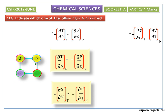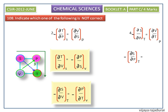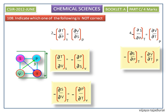Next, consider the right side of the square marked as 3. Draw the diagonal towards 3 — this is in the downward direction, so put a negative sign. The partial derivative of S with respect to P at constant T equals — since the other diagonal is in the upward direction — positive partial derivative of V with respect to T at constant P. This equation matches the fourth option, so the fourth option is also a correct Maxwell equation.